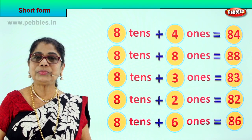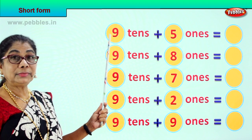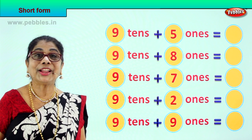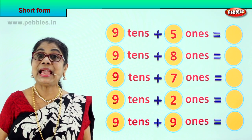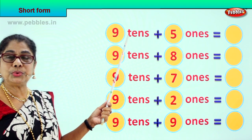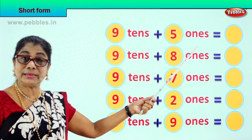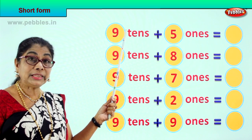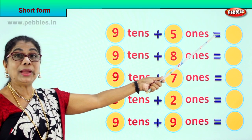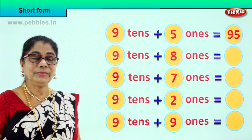Did you enjoy? Shall we go to another exercise? Look, now we have 9 tens. What is 9 tens? Good. 9 tens make 90, that is 9 and 0, 90. Good. Let's do the short form together. 9 tens plus 5 ones. 9 tens plus 5 ones, that is 90 plus 5 is equal to 9 and 5, 95.